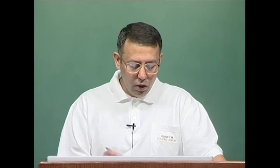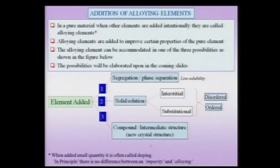When the alloying element is small in quantity, it is often called doping. Doping is the term used when you add a very small amount of an alloying element, and this is typically done in semiconductors, wherein you want to produce an n-type or a p-type semiconductor, say for instance in silicon.